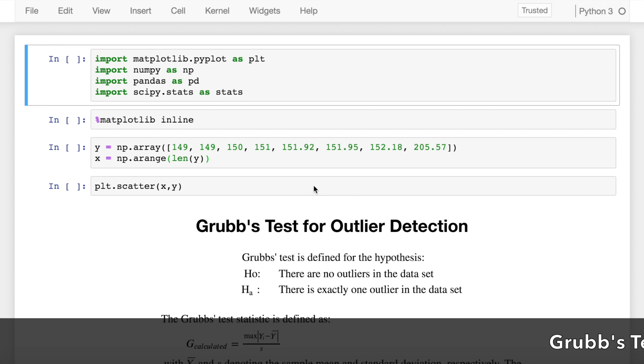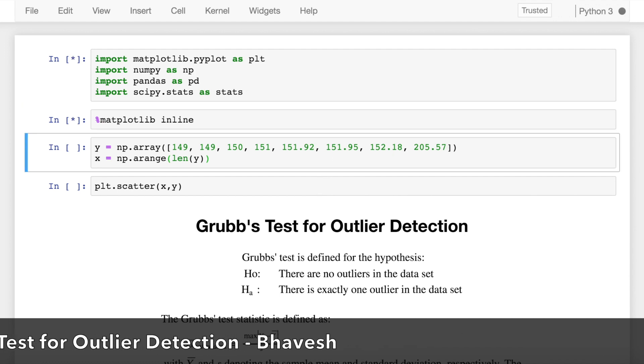Grubbs test is used to detect a single outlier in a univariate dataset that follows an approximately normal distribution. How is this test useful in detecting outliers, what is the mathematics behind it is what we'll cover in this video. So let's start by first importing the necessary modules.